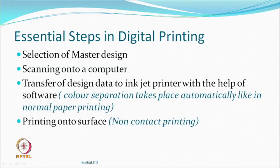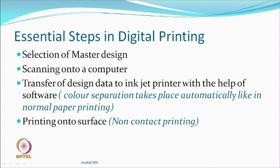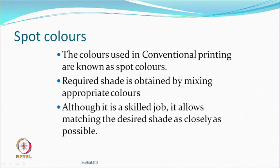The color separation here takes place automatically because computation looks at which color and divides into four colors. Every design is separated into four colors, and you have standard dyes which are used. Once it is separated, printing takes place. And it is a non-contact printing — the printer head does not contact the surface of the fabric. Unlike normal printing where the surface of the textile comes in contact with the screen or roller, here it does not come in contact.